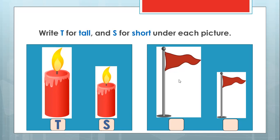Look at the flag. Cambodia has its own flag. What color is this flag? This flag is red. The taller one is red and the shorter one is also red. What letter should we write for the taller flag? Letter T. And the shorter one is letter S. Well done.